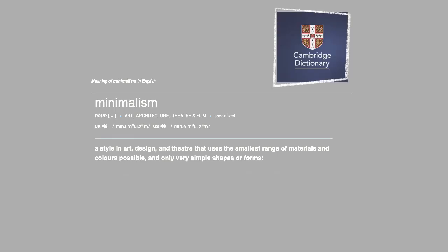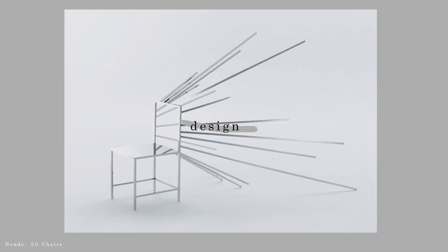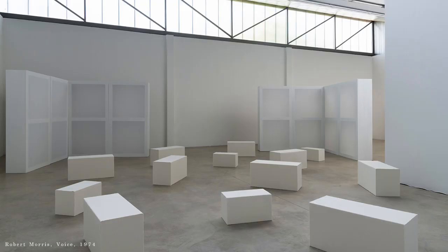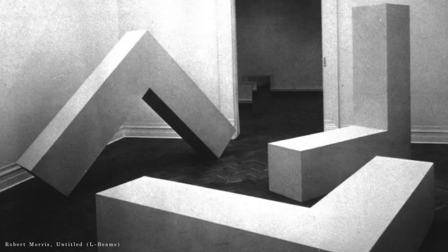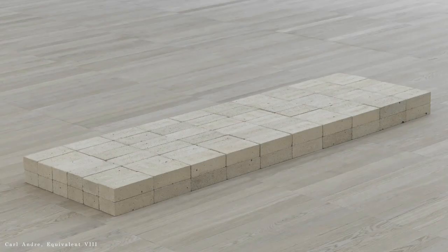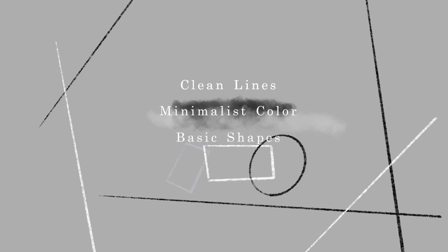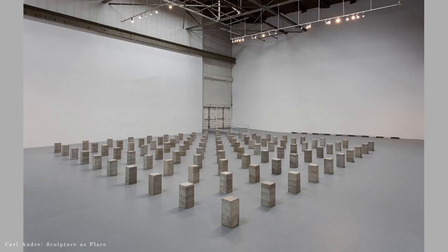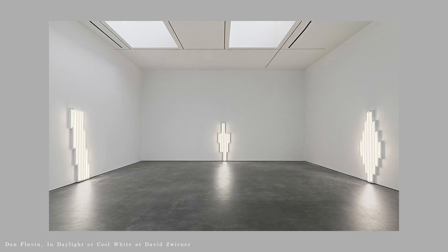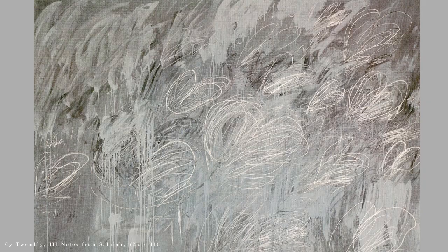What is minimalism? According to the Cambridge Dictionary, minimalism is a style in art, design, and theater that uses the smallest range of materials and colors possible, and only very simple shapes or forms. We can say that minimalism is a design style that emphasizes extreme simplicity, focusing on clean lines, minimalist color, and basic shapes. It does not contain an underlying meaning or more profound understanding, like with most abstract art.